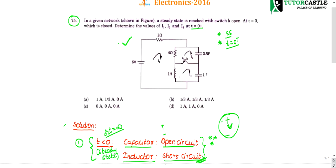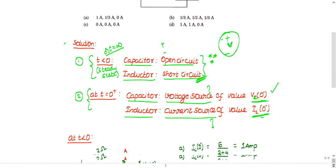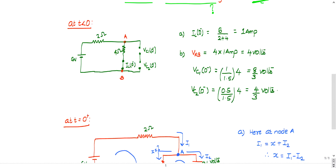Consider this circuit. Even though the question asks for t equal to 0 plus, first we need to analyze the circuit at t less than 0. At t less than 0, the inductor is replaced with a short circuit and the capacitor with an open circuit. All remaining connections — 6 volt source, 2 ohms, 4 ohms — stay intact.